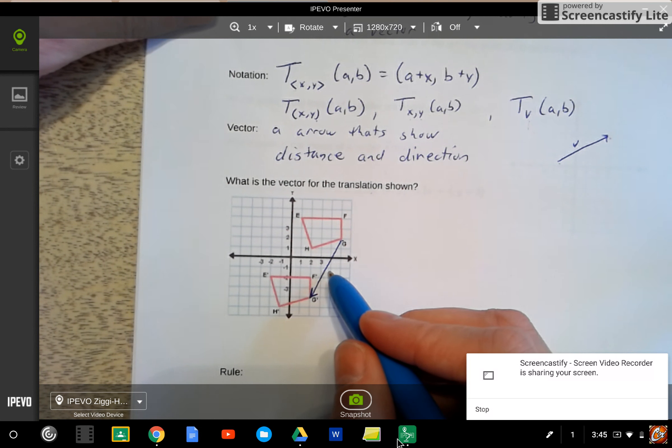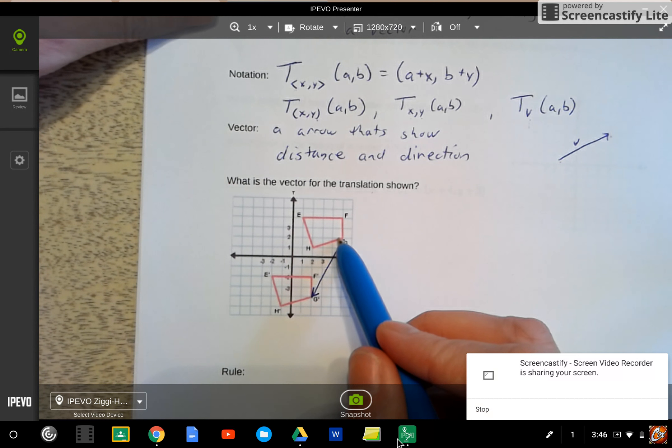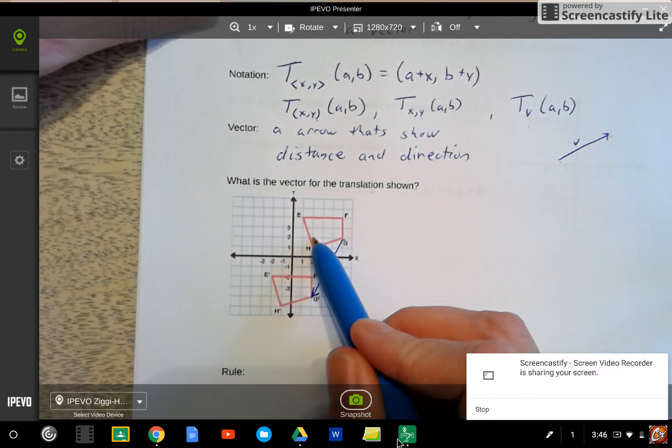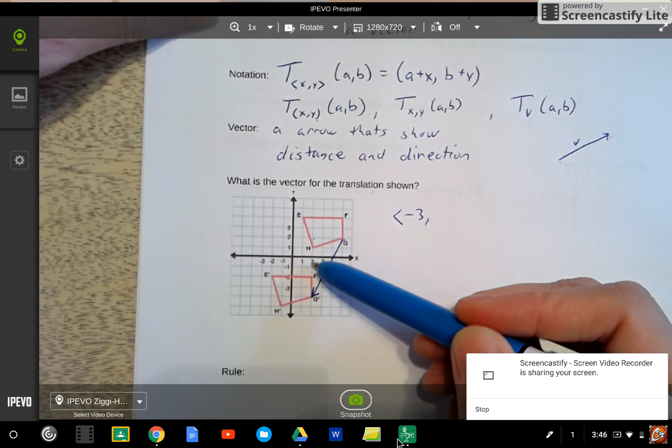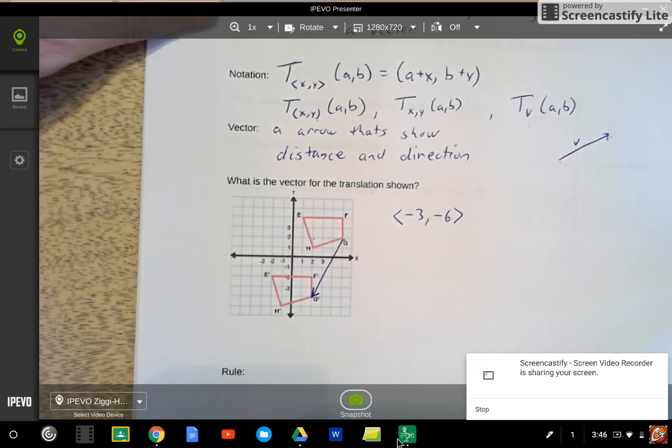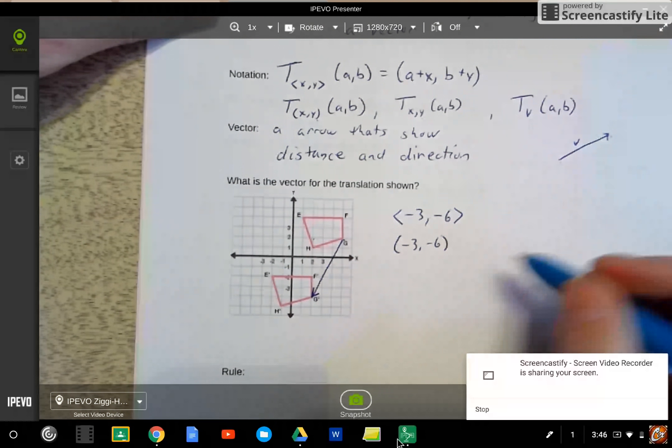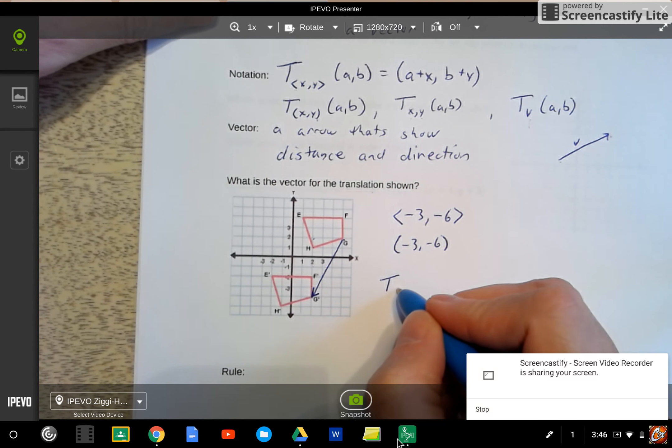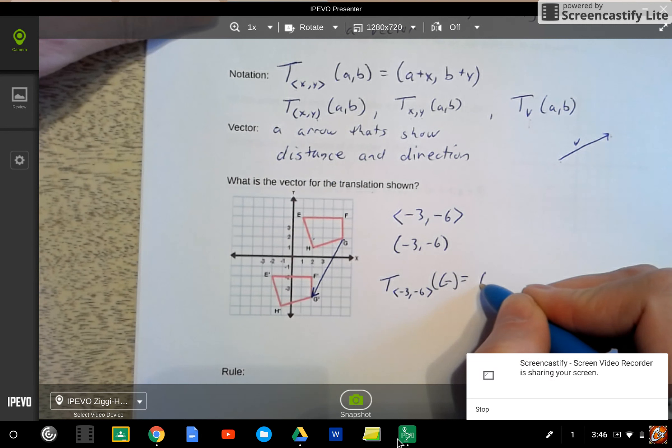So if I want to actually say how big that vector is, I can look at it from an x, y standpoint. To get from g to g prime on the x, I had to go back 1, 2, 3. So that's negative 3 on the x-axis. And then I had to go down 1, 2, 3, 4, 5, 6. So that's down 6 on the y-axis. So I could write it like that. I could write it like this as well.